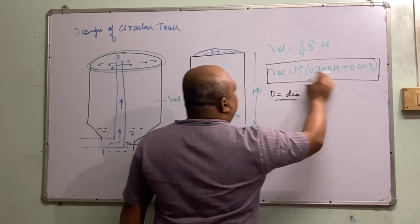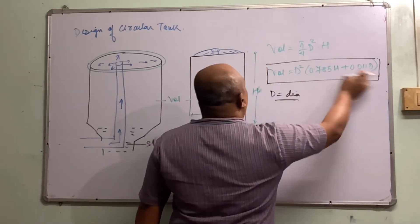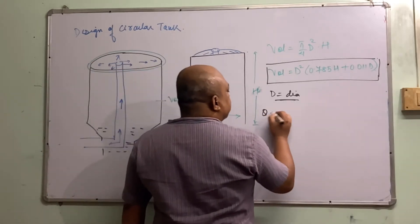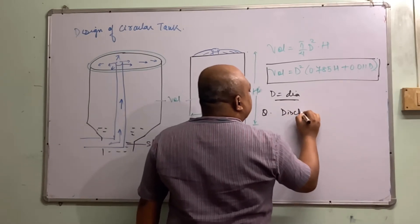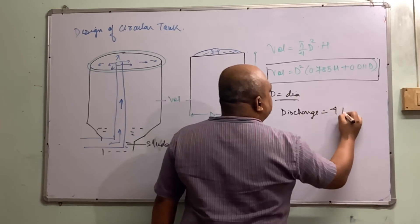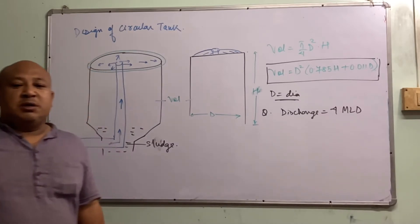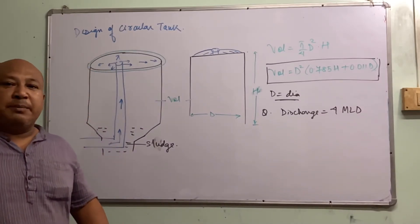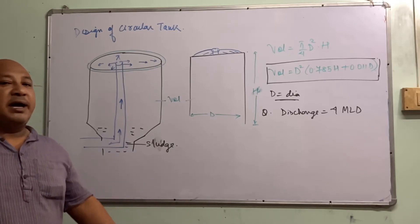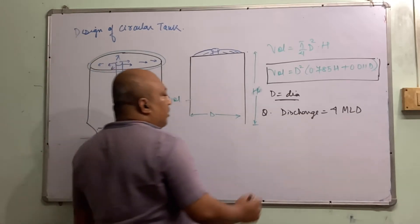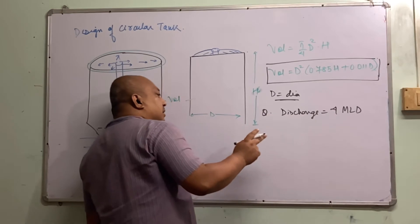So: Volume = D² × (0.785H + 0.011D), where D is the diameter. This is the key difference between the rectangular and circular tank. Now here is a question: the discharge is 4 MLD. Design a circular tank for a village with a maximum average capacity of 4 MLD.